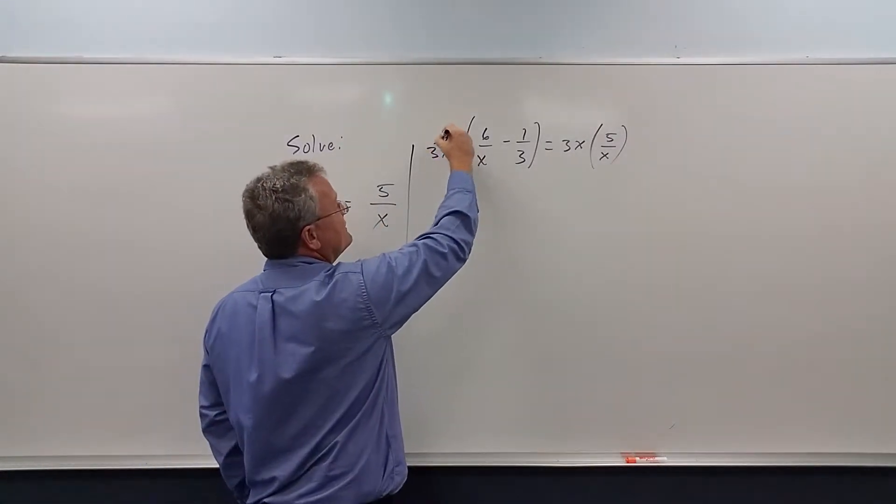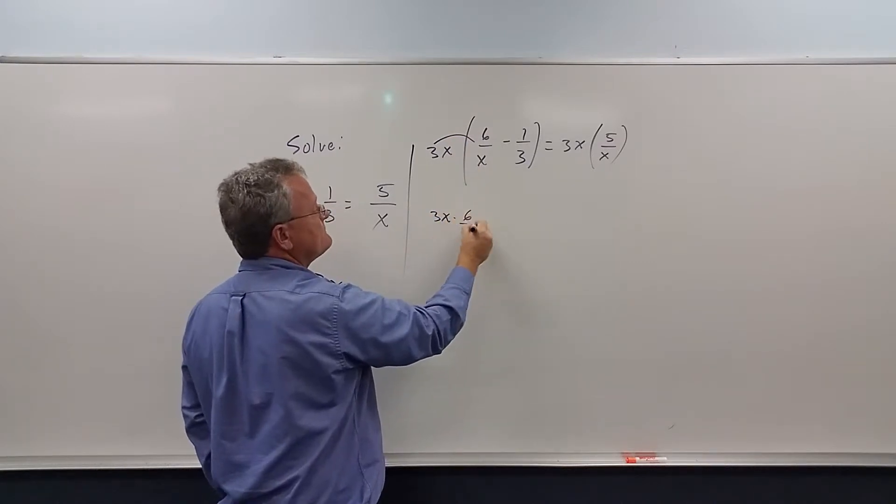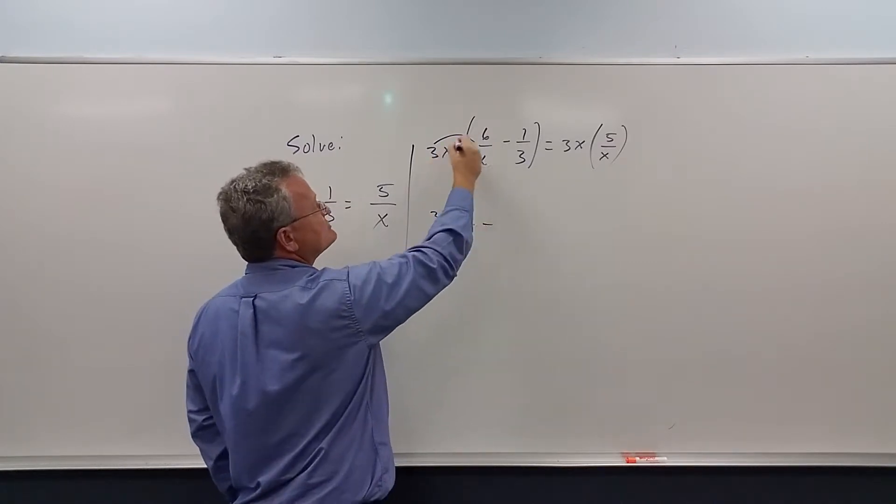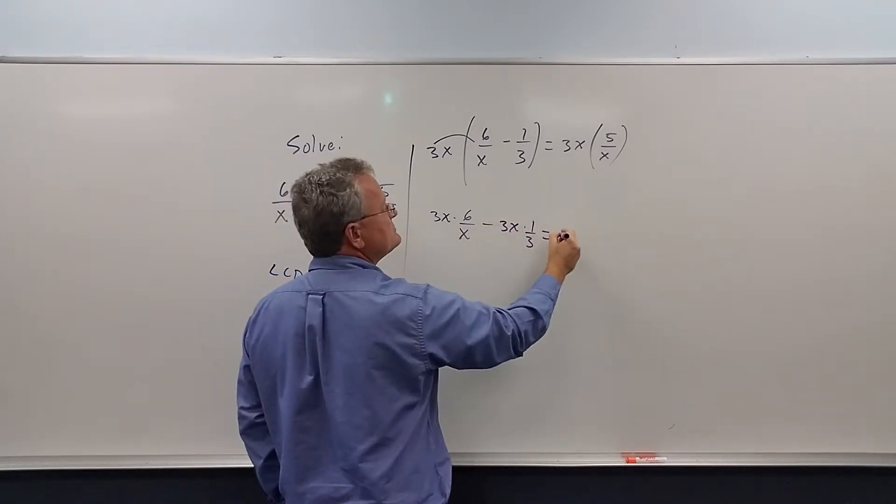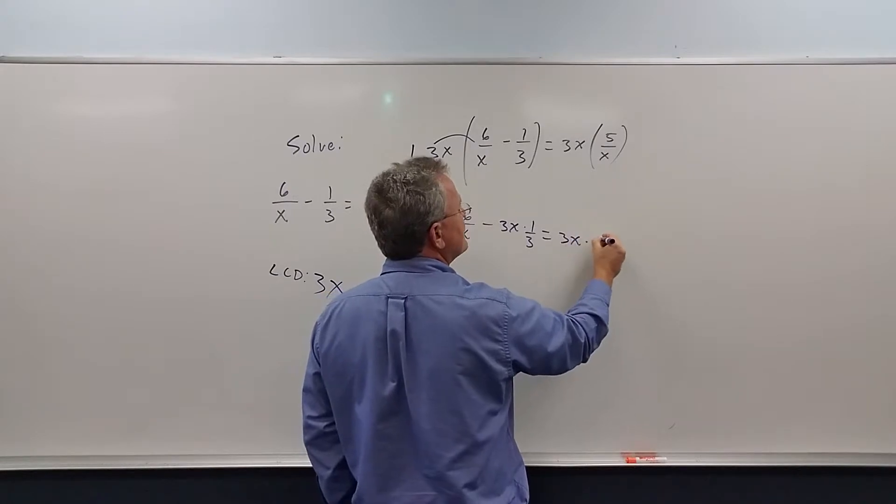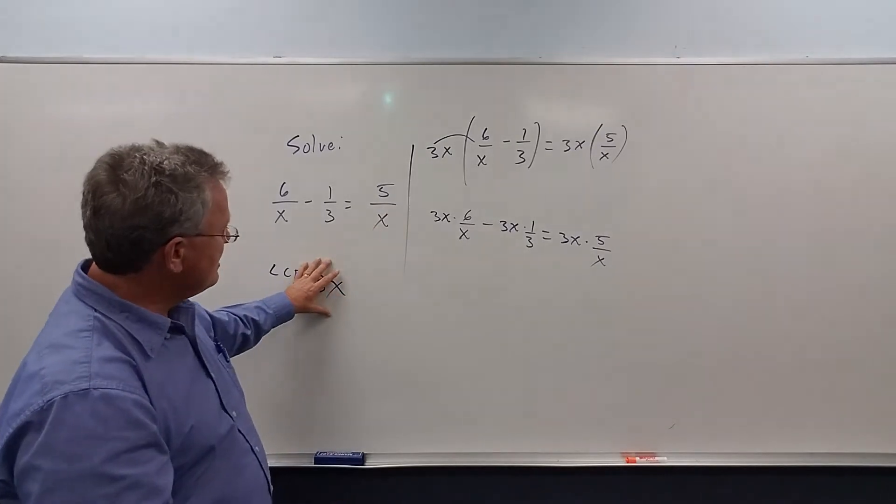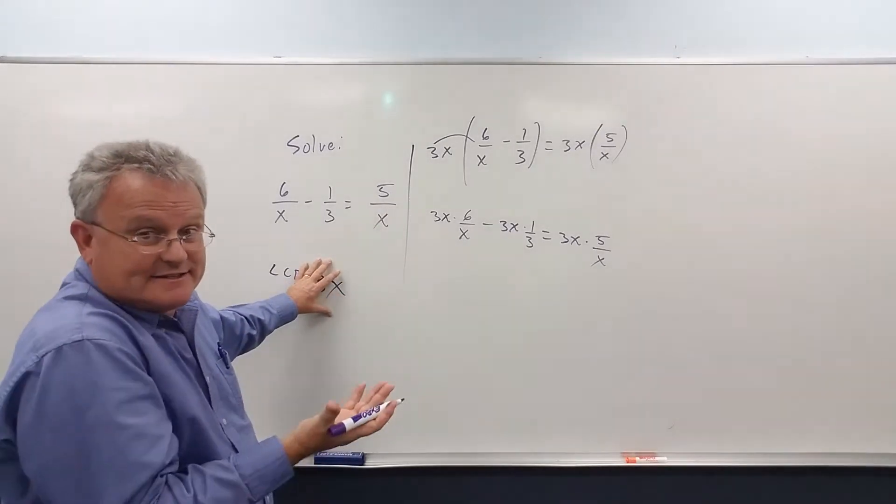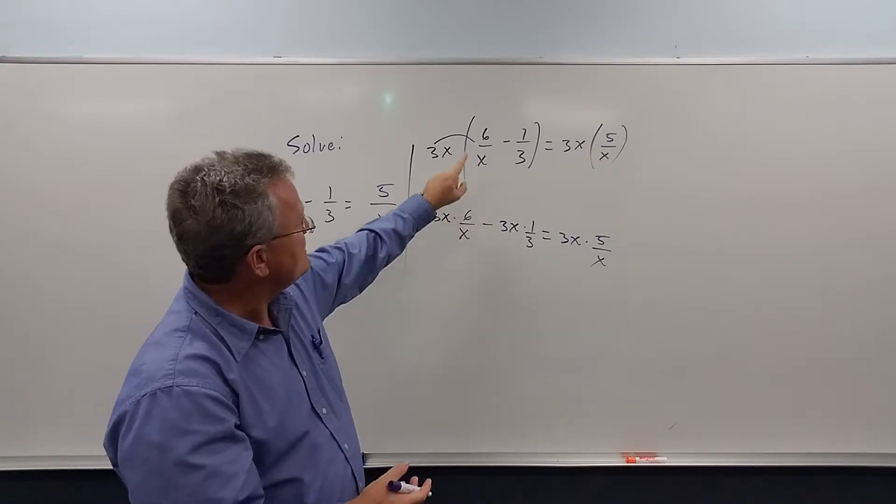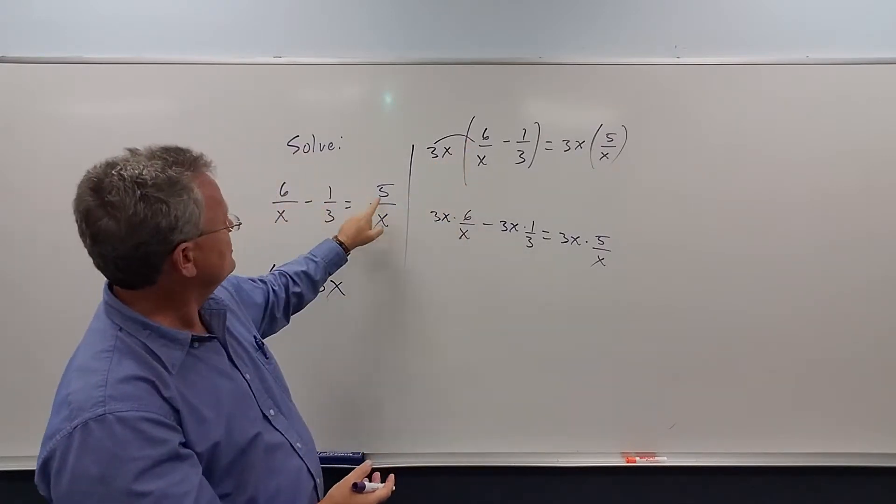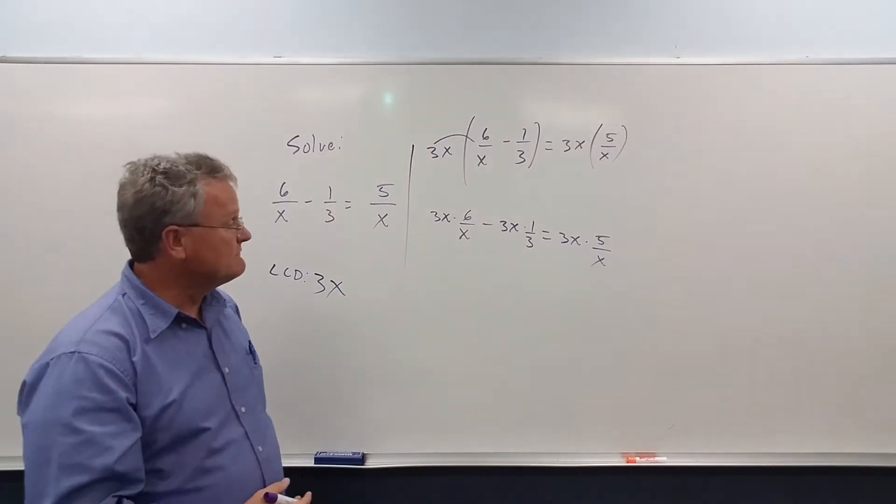So, what do we get? 3x times 6 over x, minus 3x times 1 third, equals, let me just write this as 3x times 5 over x. So, notice, when we multiply both sides by some expression, it's the same thing as multiplying each term by that expression. And that's what I'm going to do in the following videos.